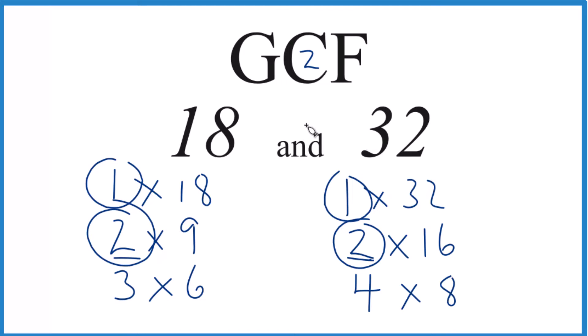There are other ways you could do it. You could use prime factorization, but for numbers that are the size of 18 and 32, this is a good way to do it.